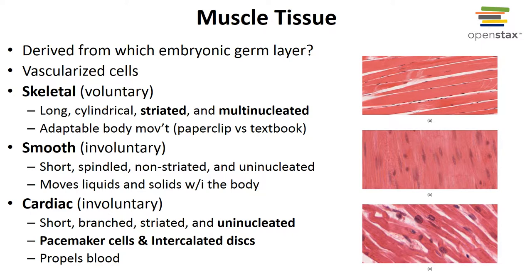The third type of muscle tissue is cardiac muscle tissue, which is found only in the heart. The cells are short and branched, usually uninucleated but occasionally can be binucleated. Cardiac muscle is involuntary. It also possesses striations like skeletal muscle but has intercalated discs as well. Cardiac muscle possesses intermediate twitch with intermediate contractions, moves blood, and maintains blood pressure.